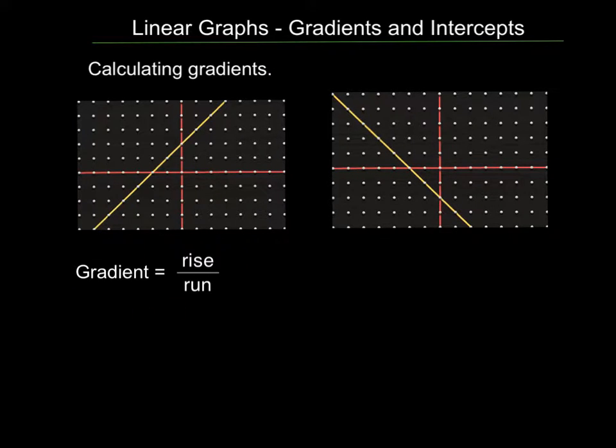To calculate the rise over the run you need to make a triangle on your graph. So I'm going to put a triangle here, and I'm choosing that point because it's easy to see what's going on. The rise is how far you go up and the run is how far you go across. So rise is up and run is across. You need to start at a point on the graph like this one and see how far you run across and rise up.